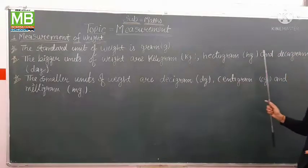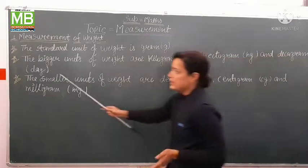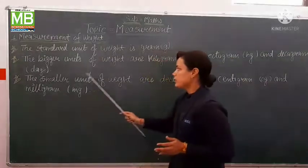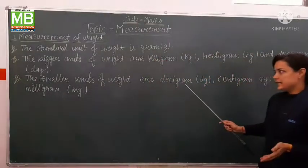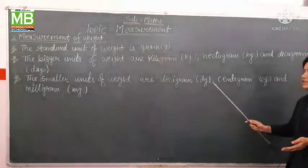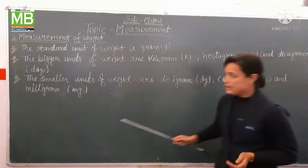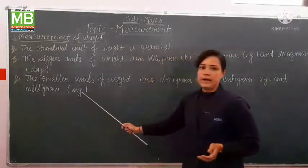hectogram denoted by hg, and decagram denoted by dag. The smaller units of weight are decigram, denoted by dg, centigram, denoted by cg, and milligram, denoted by mg.